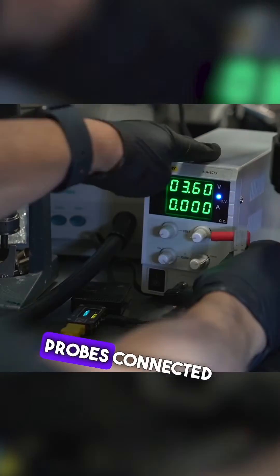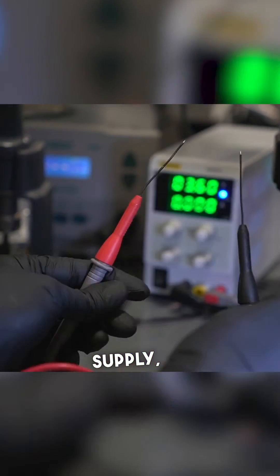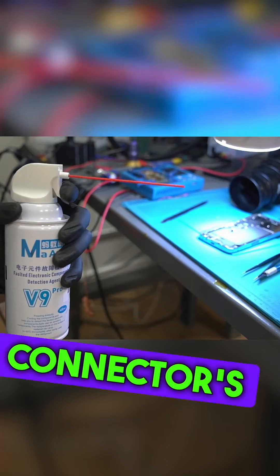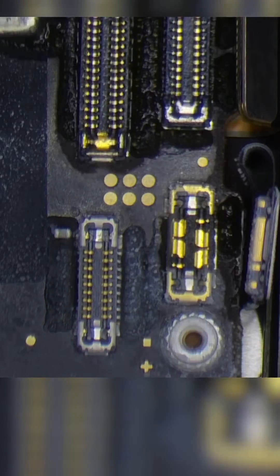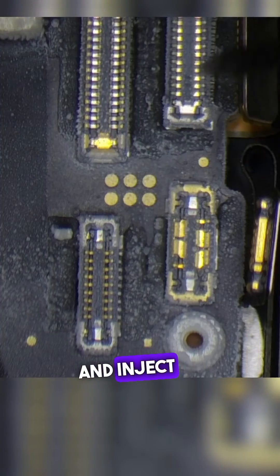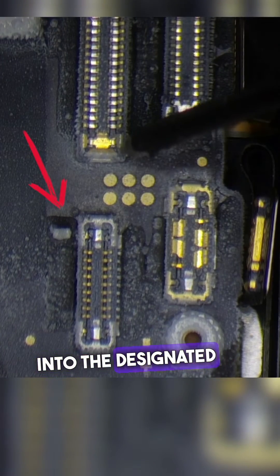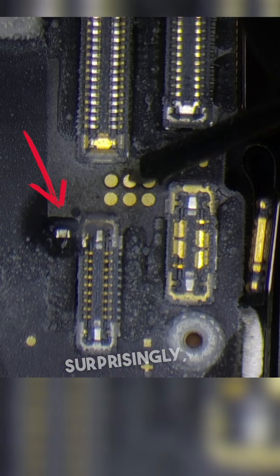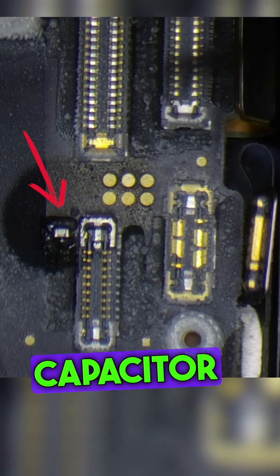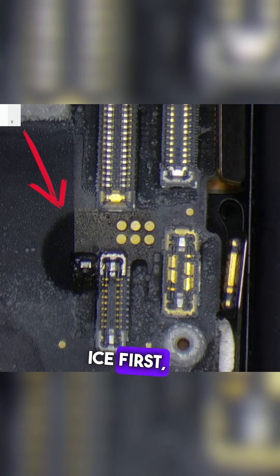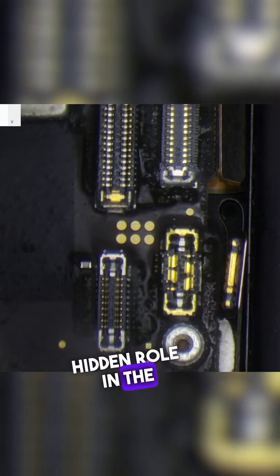With the multimeter probes connected to the power supply, we apply freeze spray to the connector's surroundings and inject voltage into the designated test point. Surprisingly, a capacitor shows itself by melting the ice first, revealing its hidden role in the short circuit.